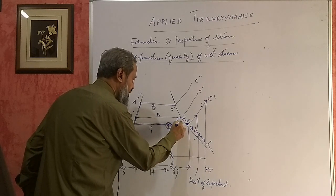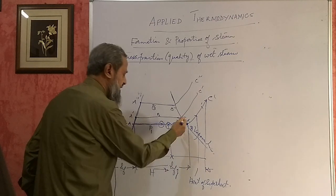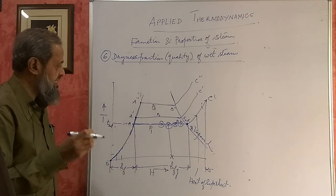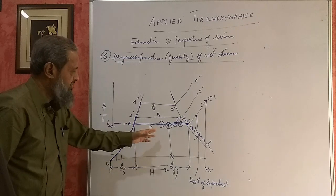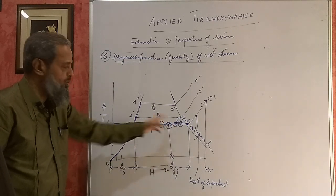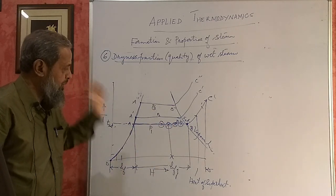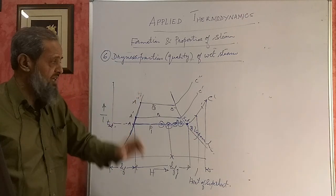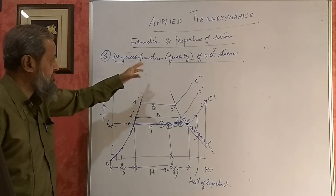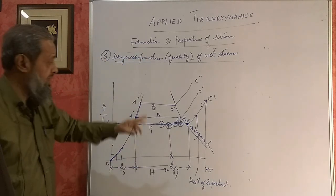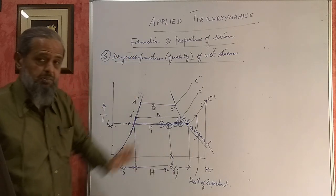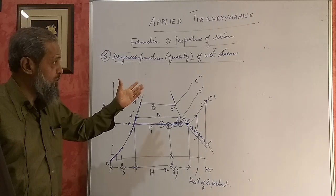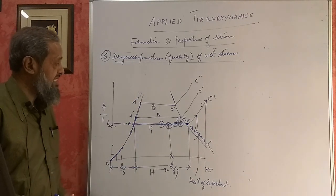Here also it is wet, here also it is wet, here also it is wet. So if you simply say wet steam, it becomes a general term — we do not know where it is. To give its exact location, where exactly we have stopped, we have to give the dryness fraction. Whenever there is a problem on wet steam, we have to give the dryness fraction of wet steam. So first we must know what is the meaning of dryness fraction.